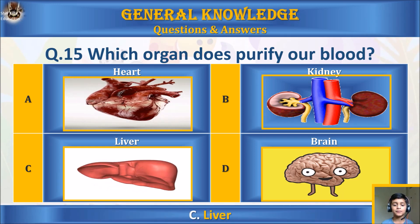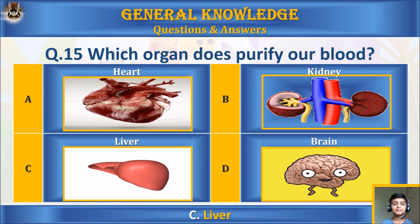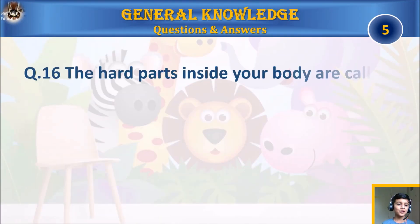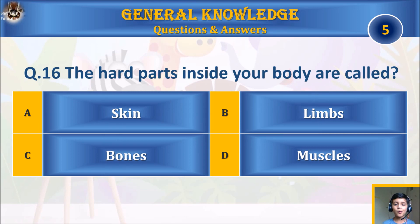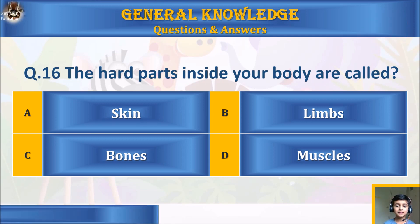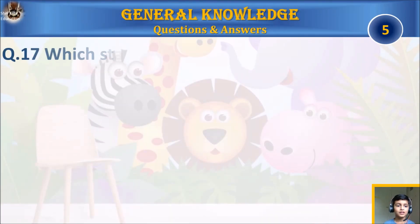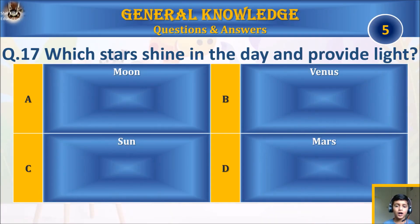Question fifteen: which organ purifies our blood? The answer is C) liver. Question sixteen: the hard parts inside your body are called: A) skin, B) limbs, C) bones, or D) muscles? Your time starts. The answer is C) bones.